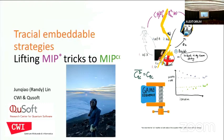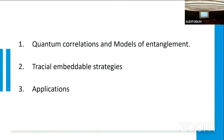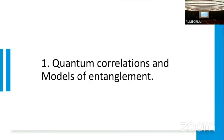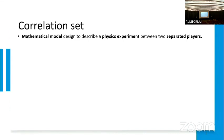Let's move on to the last talk in the session. We have Randy talking about tracial embedding strategies from MIP-star to MIP-co. Thank you for the introduction. This is a brief outline of my talk. I first want to explain the different quantum correlations and the model entanglement we'll be using. When we first talk about correlation set, you should really think about this as a mathematical model to describe a physical experiment for two separate players.